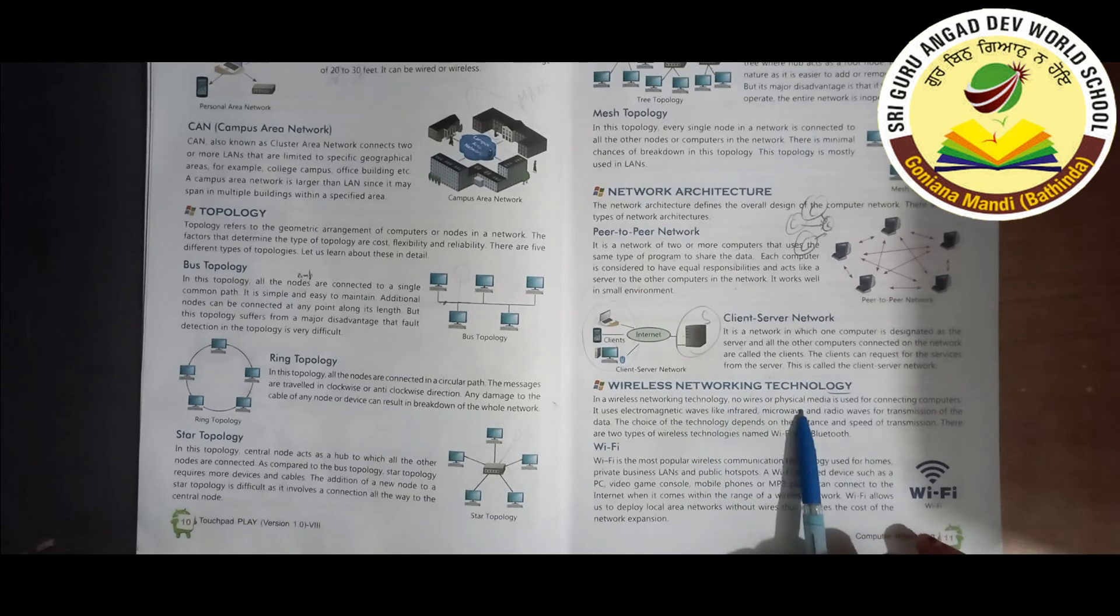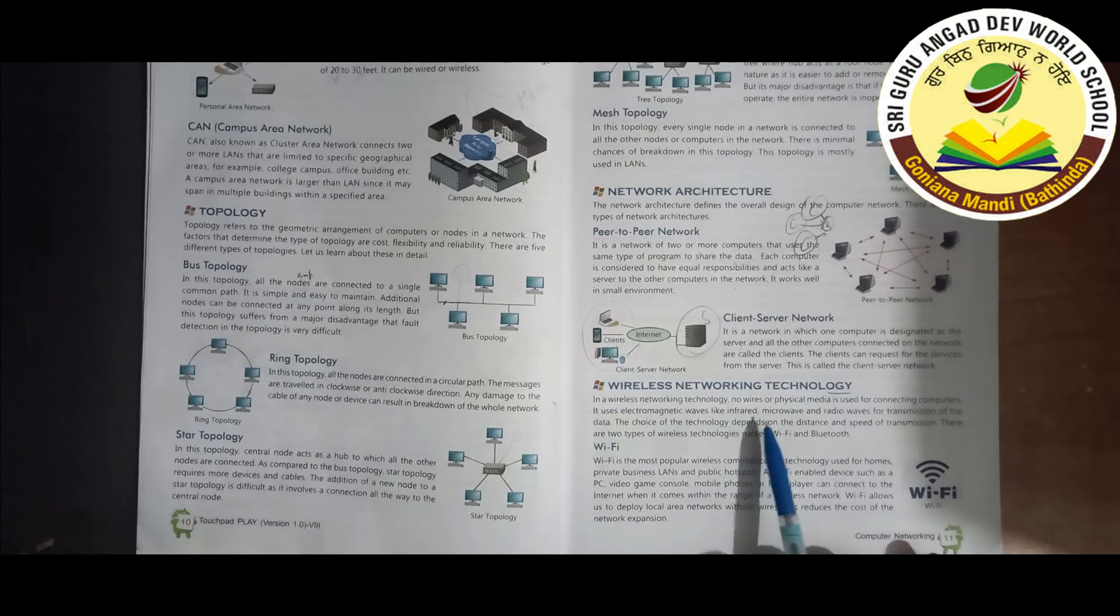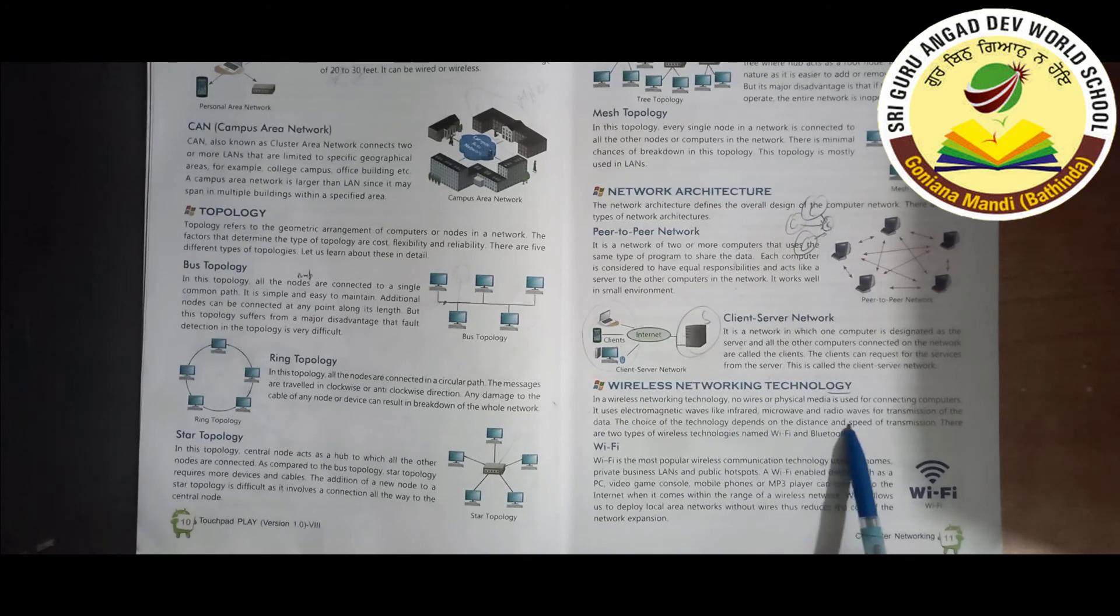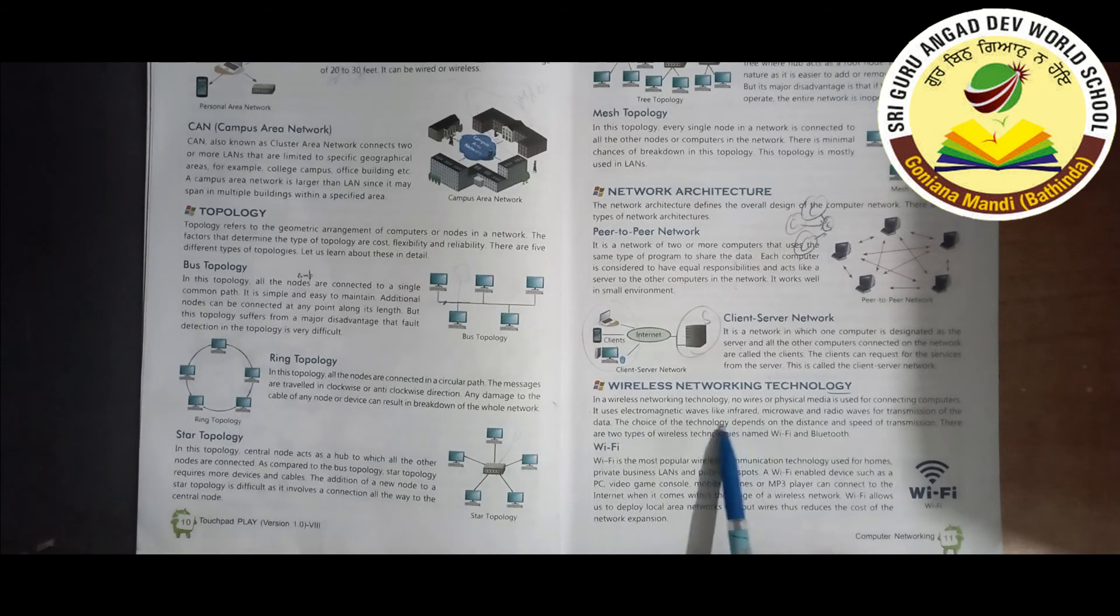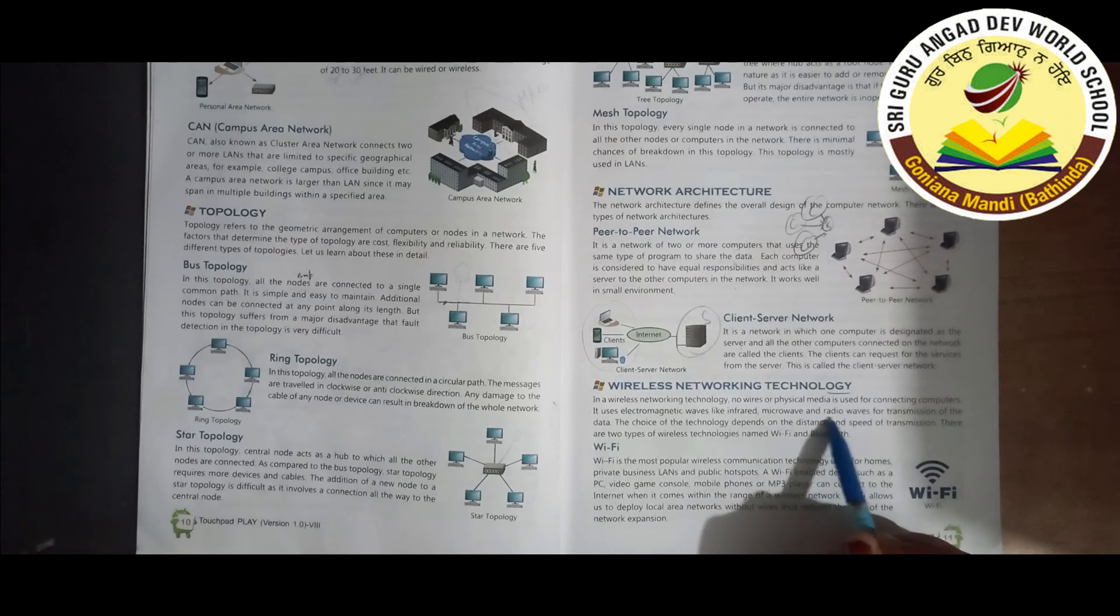Wireless networking technology: In a wireless network technology, no wire or physical media is used for connecting computers. It uses electromagnetic waves like infrared, microwave, and radio waves for transmission of data.